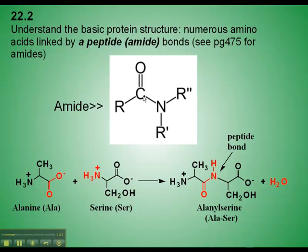You can see the C double bond O is here, and the nitrogen is right there. So in fact, the way this functional group is drawn here is reverse of the way it's laid out in this structure. That's okay.